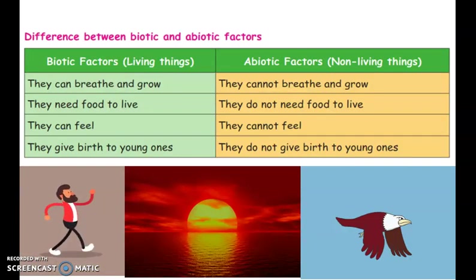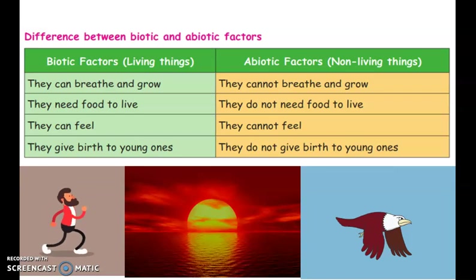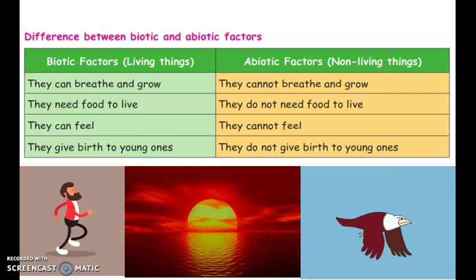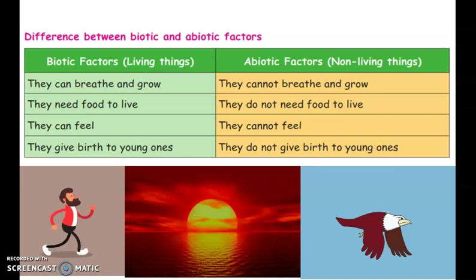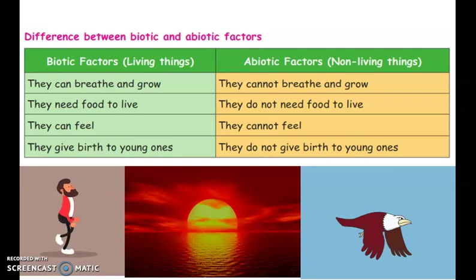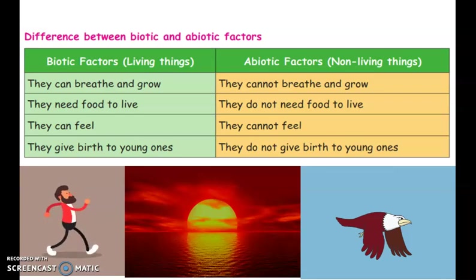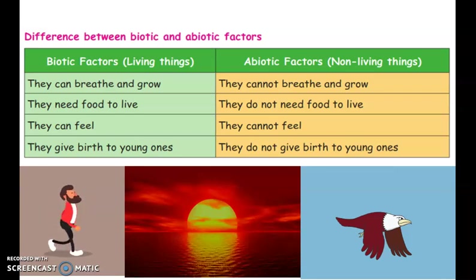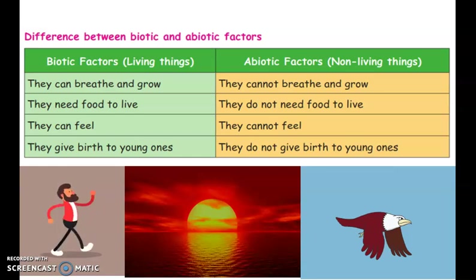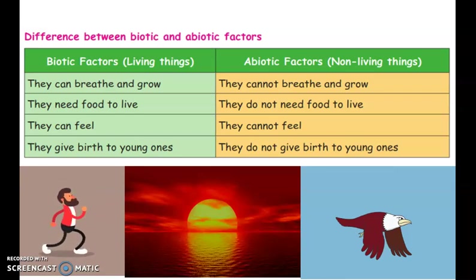Now we will see the difference between biotic and abiotic factors. Biotic factors are living things; abiotic factors are non-living things. Living things can breathe and grow; non-living things cannot breathe and grow. Living things need food to live; non-living things do not need food. Living things can feel; non-living things cannot feel. Living things give birth to young ones; non-living things do not.